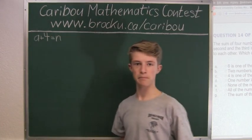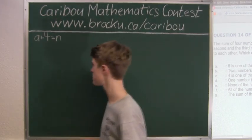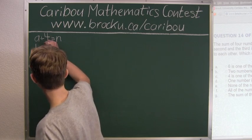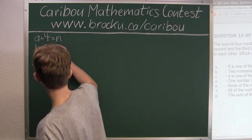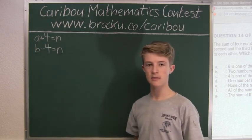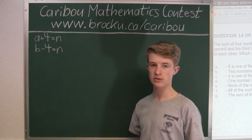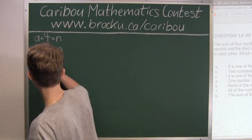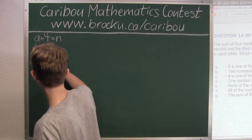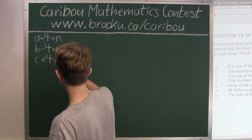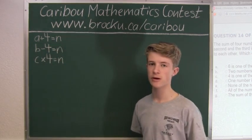Then we know that B minus four equals N. Then we know that C times four equals N. And D divided by four equals N.